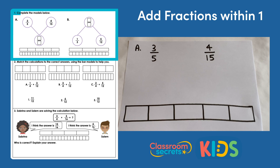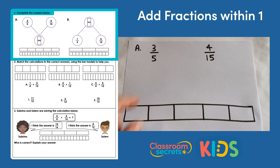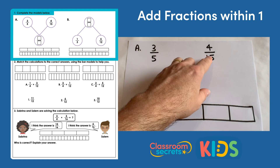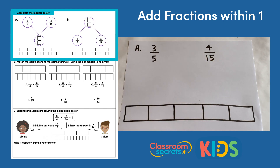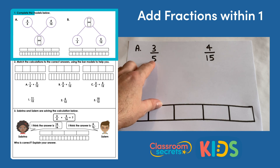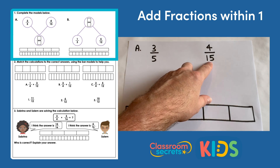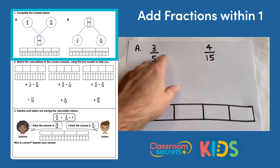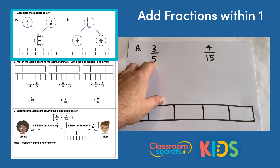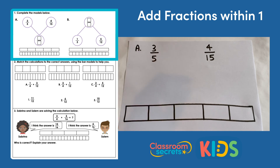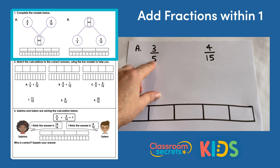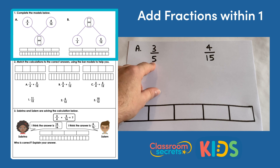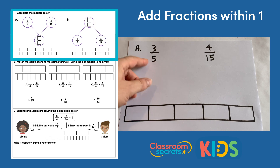Question one says complete the models below. We have three fifths and four fifteenths; we need to add those together. To do that we need to convert the fifths into fifteenths, making the denominator on both fractions the same so we can add them. Fifteen is a multiple of five so we know we can do that, so we'll convert the fifths to fifteenths.